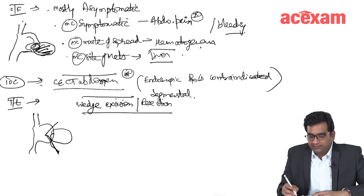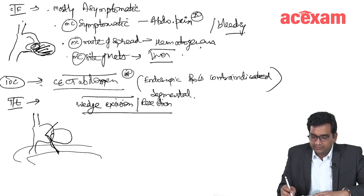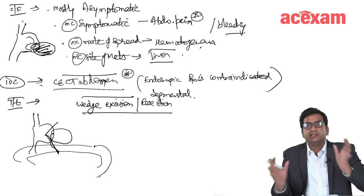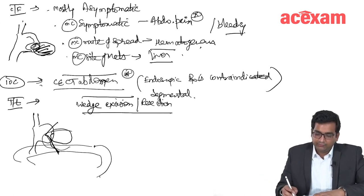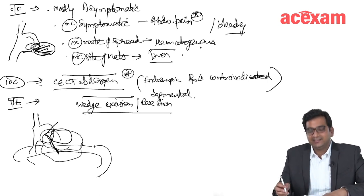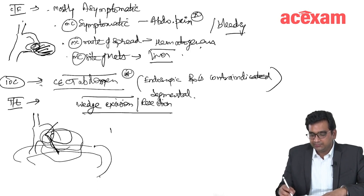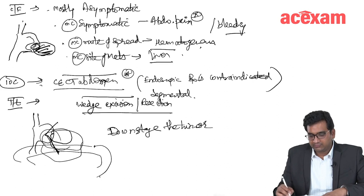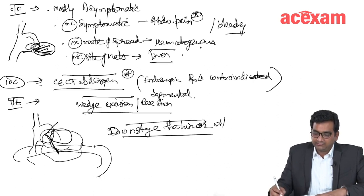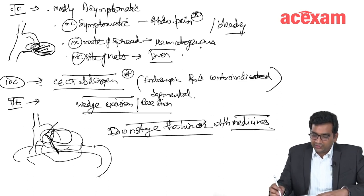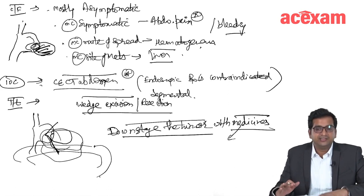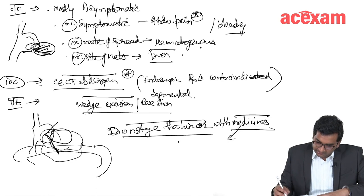If the GIST is very large, as it is mainly asymptomatic, it grows gradually and may involve other structures like transverse colon, transverse mesocolon, or pancreas. In these cases, it is advisable to first downstage the tumor with medicines and then perform the surgery. What medicines are we giving to downstage this tumor? Generally, we give imatinib mesylate.